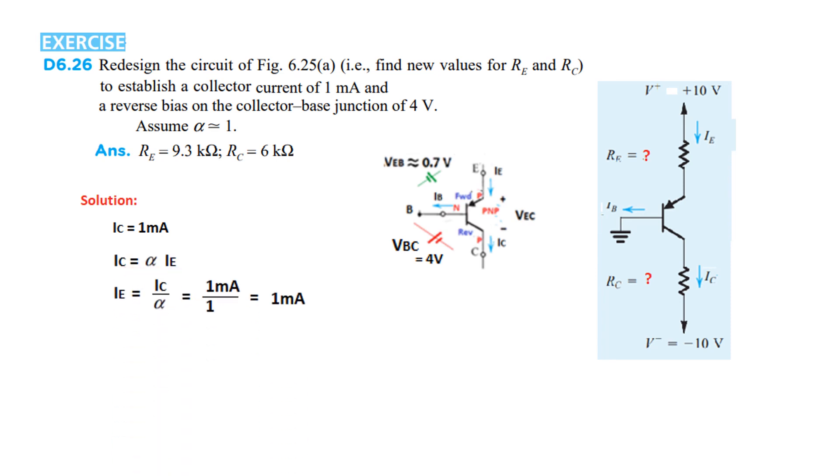IC is given 1 milliampere. From IC, we can calculate IE. IC over alpha. 1 milliampere divided by alpha is given 1. So, IE is also 1 milliampere. So, we put these two values. VEB, we know, 0.7. VBC is given 4 volt. So, from base collector junction, 0 that is VB plus VBC 4 is equal to VC. So, VC will be 4 volt. This voltage VC 4 volt.